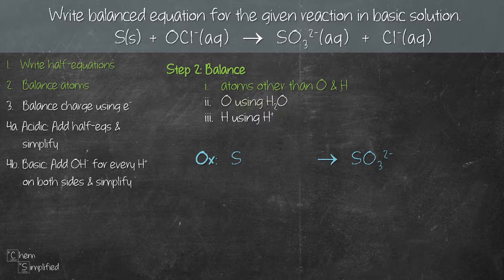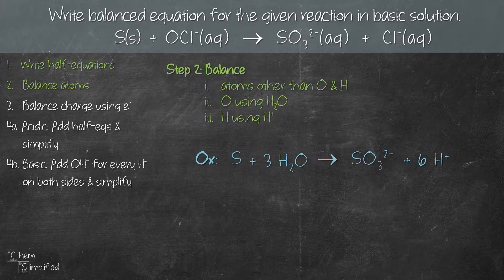Moving on to oxygen: on the left-hand side we have no oxygen, and on the right-hand side we have 3 oxygen, so we're going to add 3 H₂O on the left-hand side. Now oxygen is done, we move on to hydrogen. Because we added 3 H₂O on the left-hand side, we now have 6 H on the left. Because we don't have any H on the right-hand side, we're going to add 6 H⁺ on the right-hand side. With that, we are done balancing the atoms for the oxidation equation.